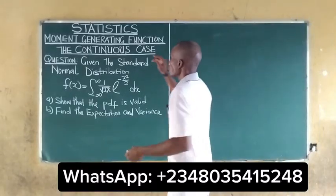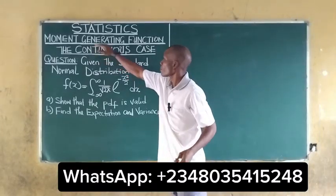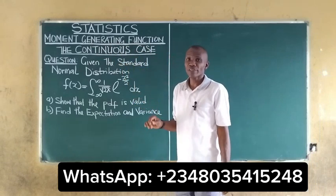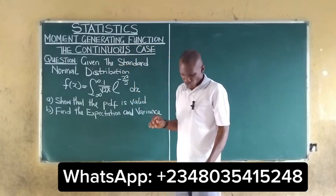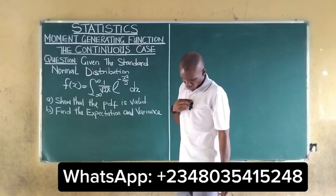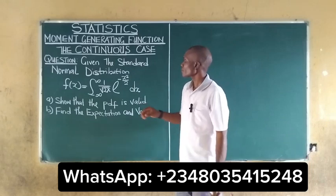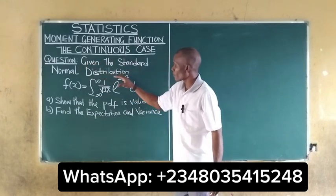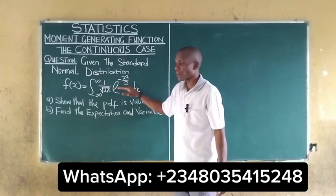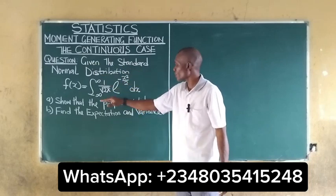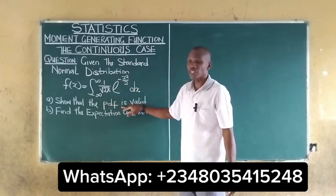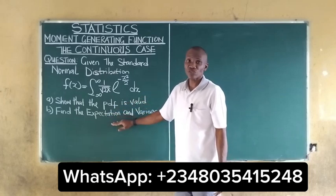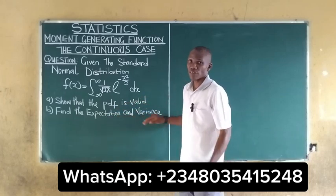In this video, we will be talking about the moment generating function. We are given the standard normal distribution, which is our PDF, and we are asked to show that the PDF is valid, and also find the expectation and the variance.